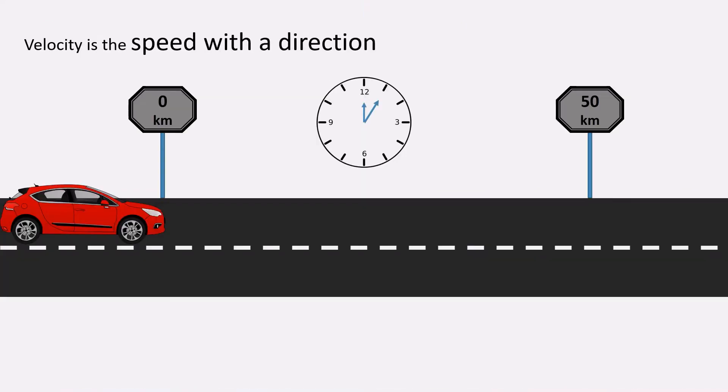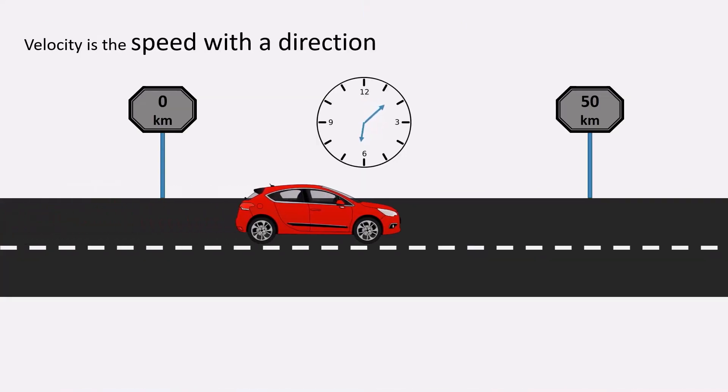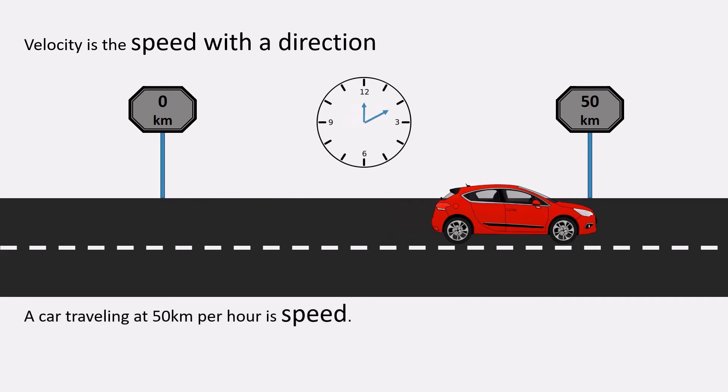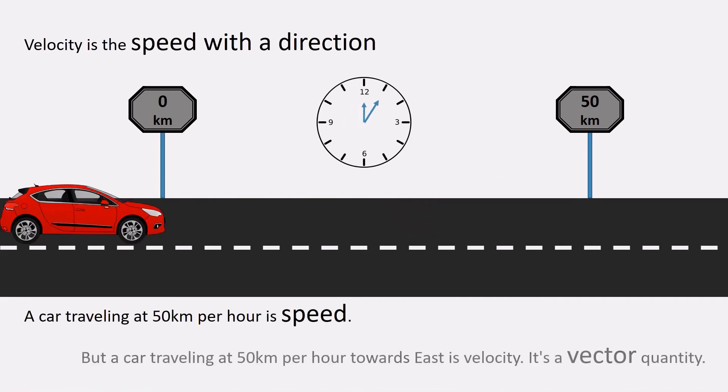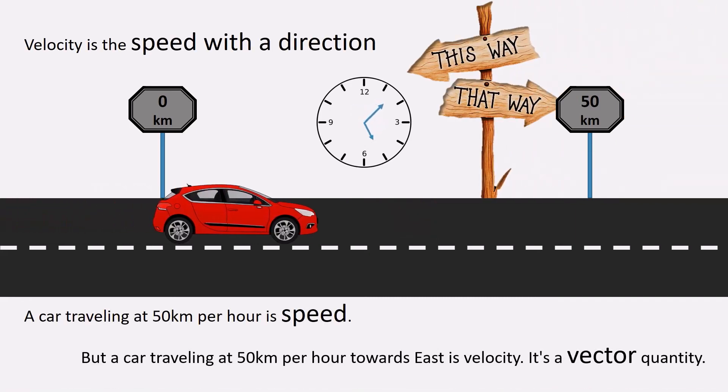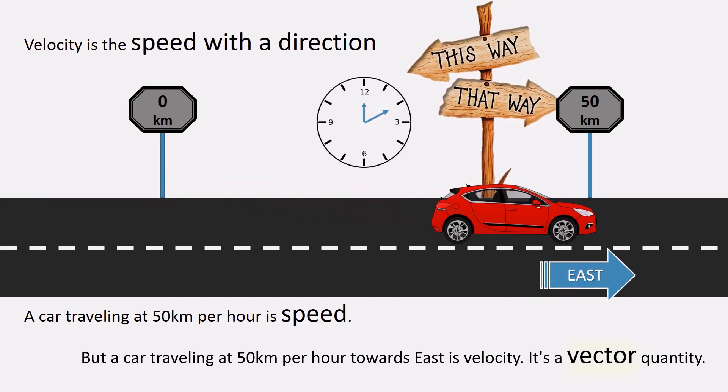Velocity is the speed with a direction. A car traveling at 50 km per hour is speed. A car traveling at 50 km per hour towards east or any other direction is velocity. It's a vector quantity.